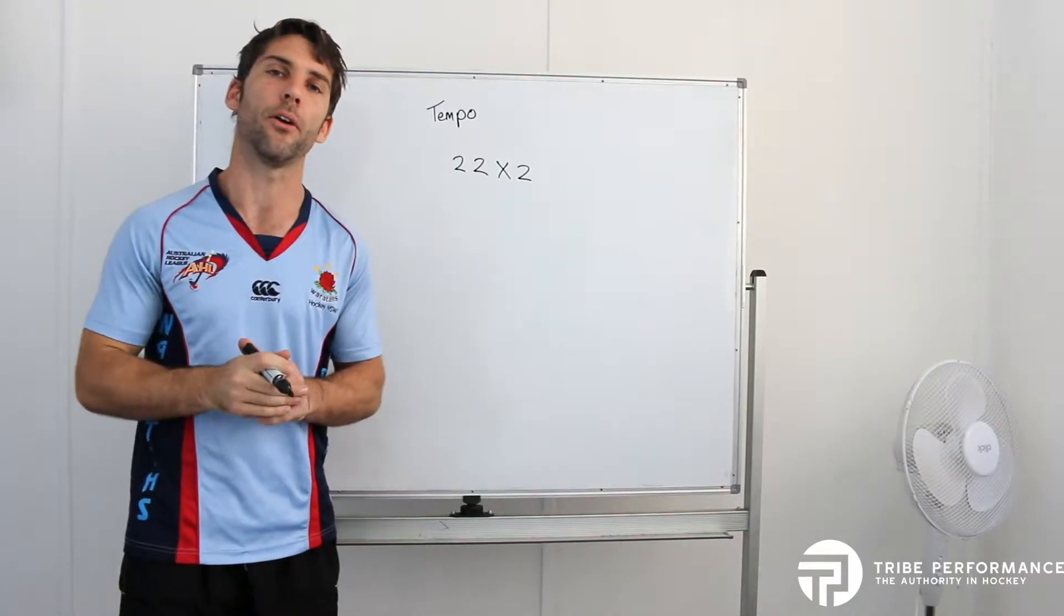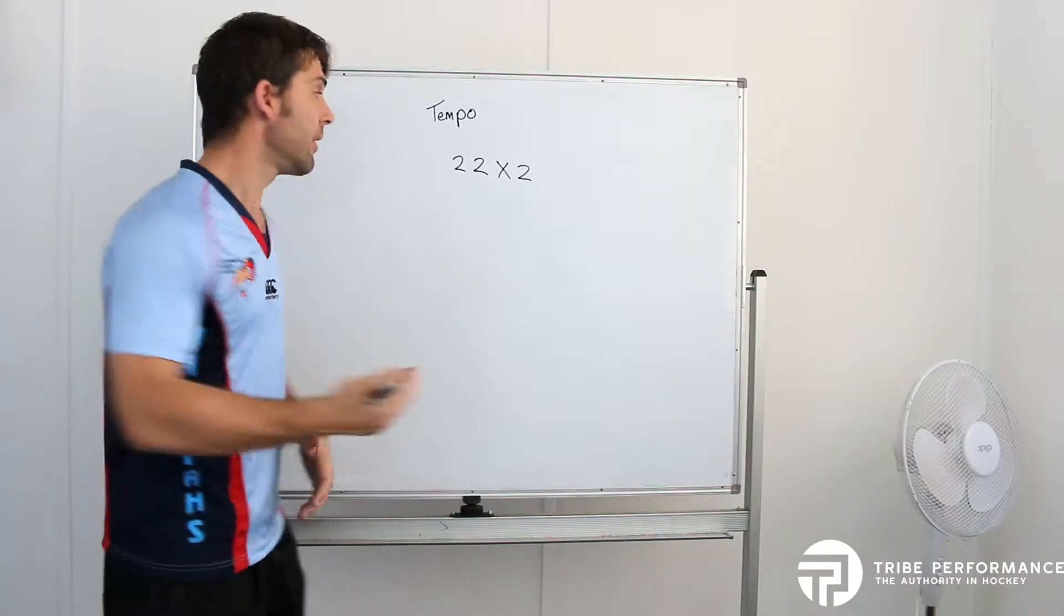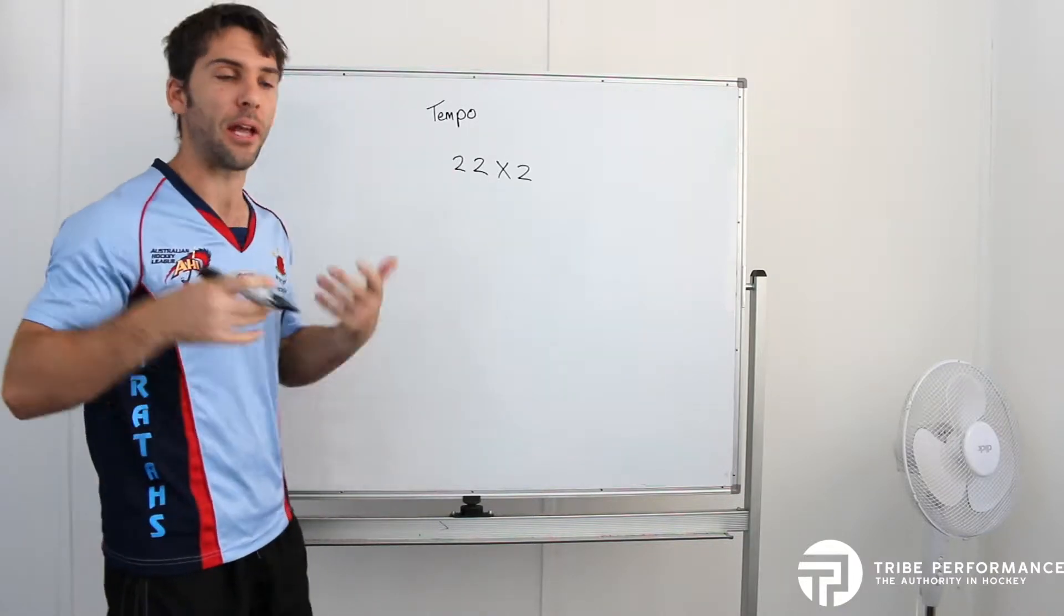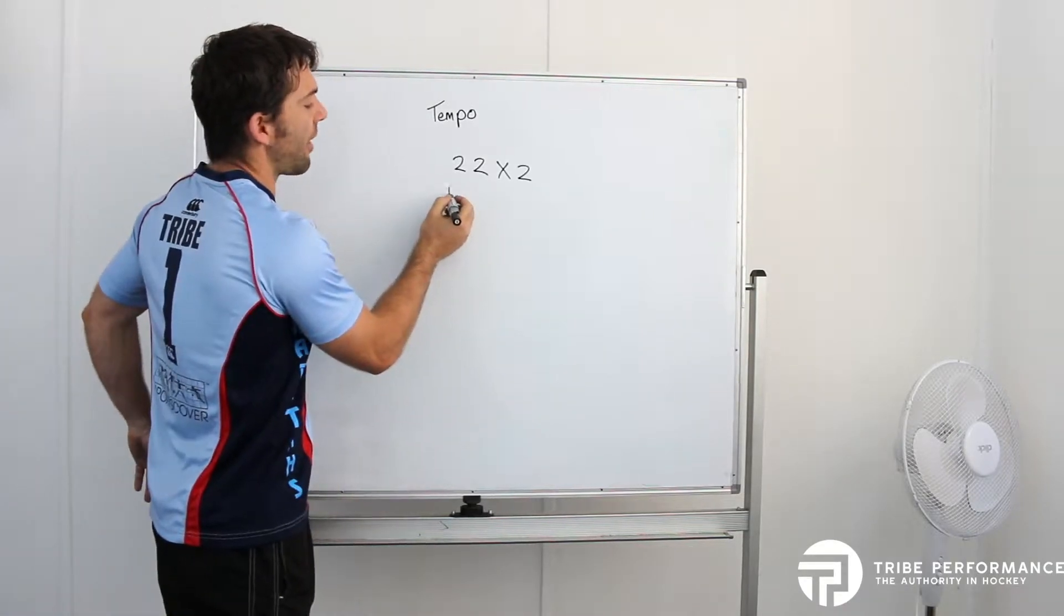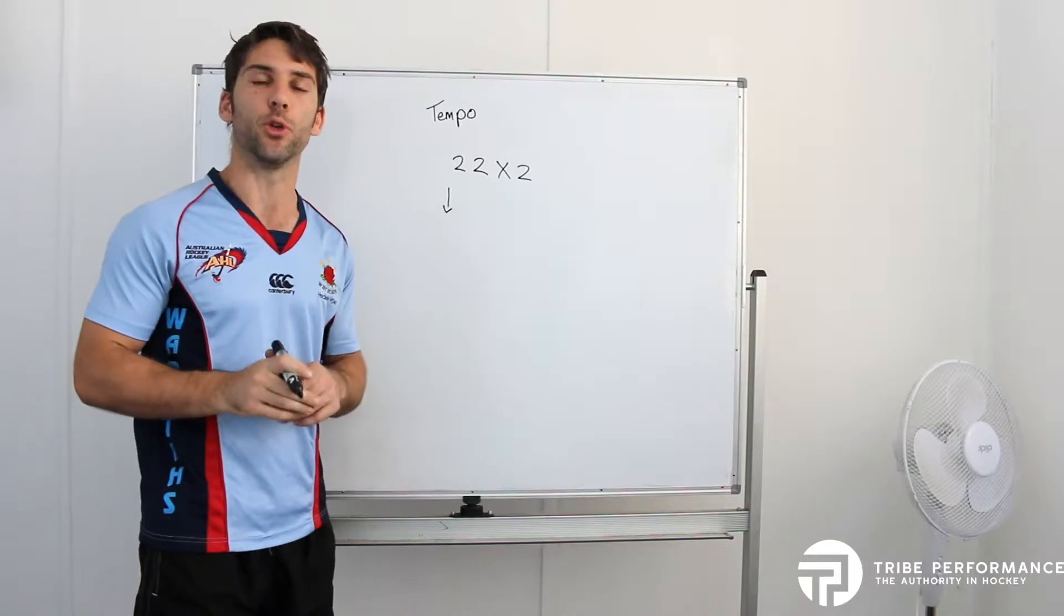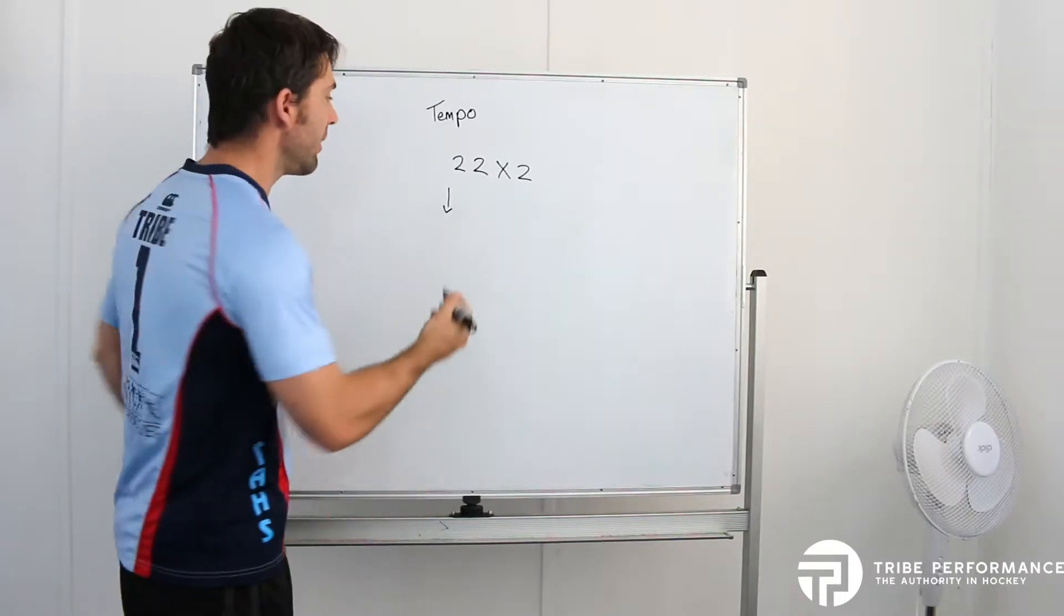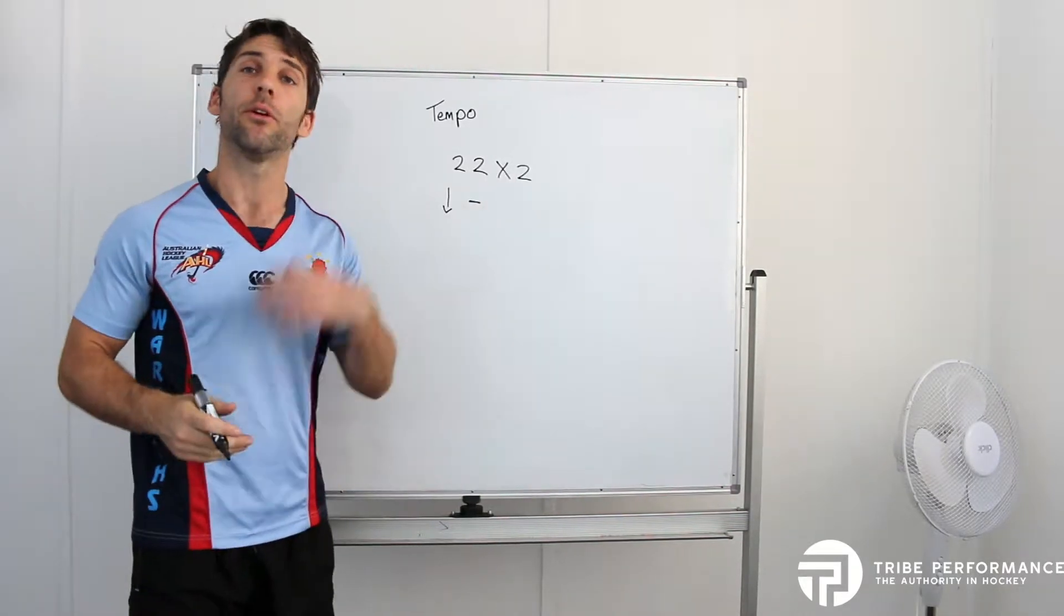Let's use for instance our squat. The first number would be after we've unwrapped the bar, we lower to the bottom of our squat for a count of two. That would be one, two on the way down.